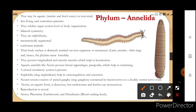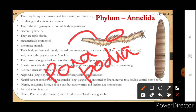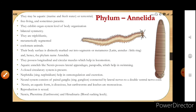In Nereis we talked about parapodia — those are the lateral appendages visible in the diagram. These help in locomotion. In earthworm, setae help in locomotion. Annelids also have longitudinal and circular muscles which help in locomotion.